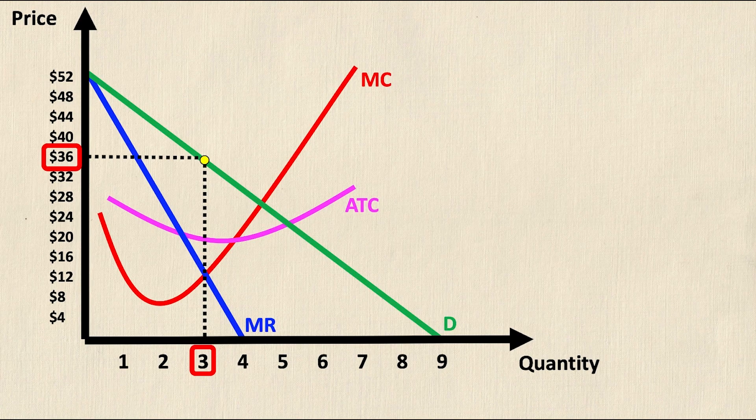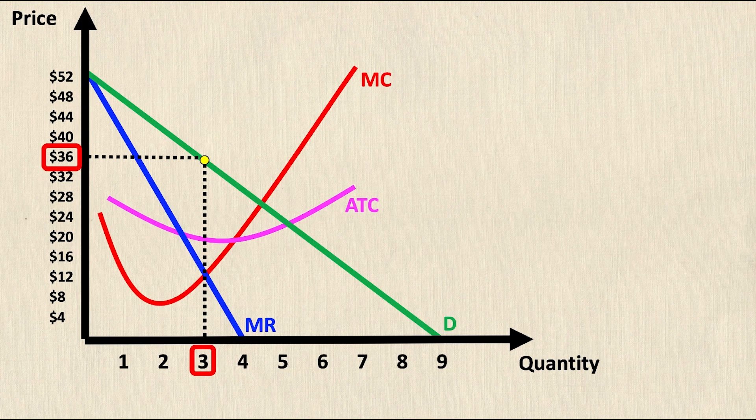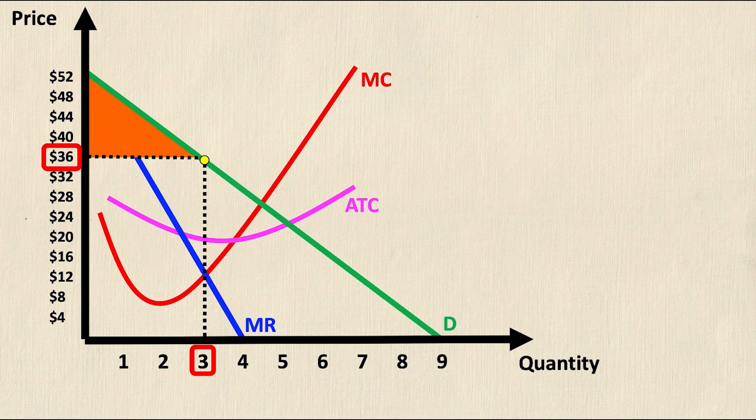Now recall that when looking at a graph the consumer surplus is the area below the demand curve and above the selling price. So in this case it's represented by this orange triangle.